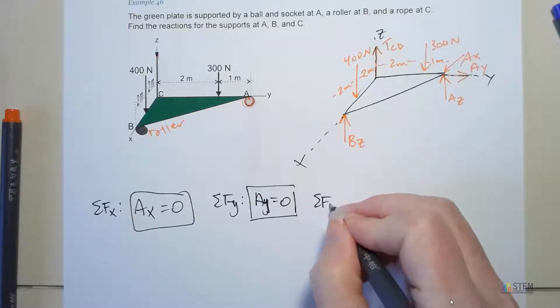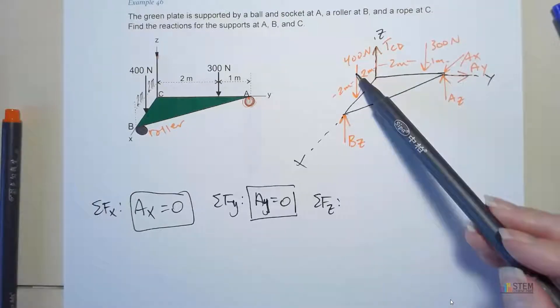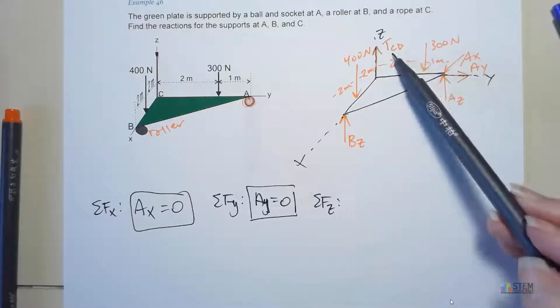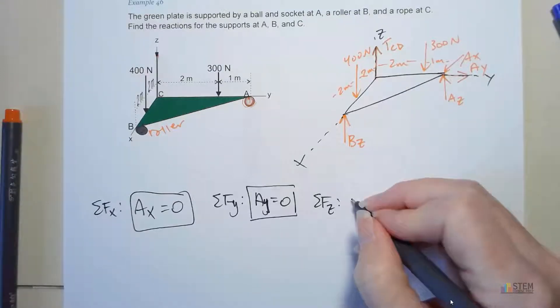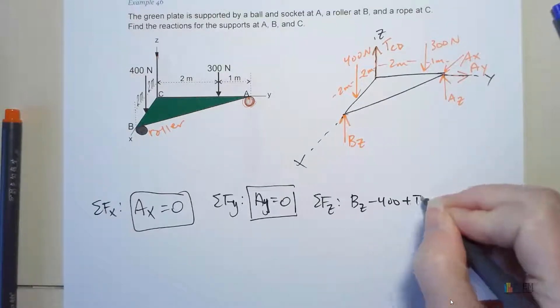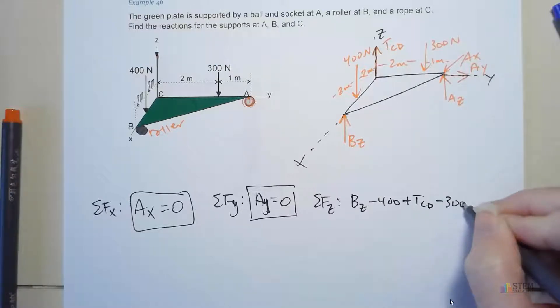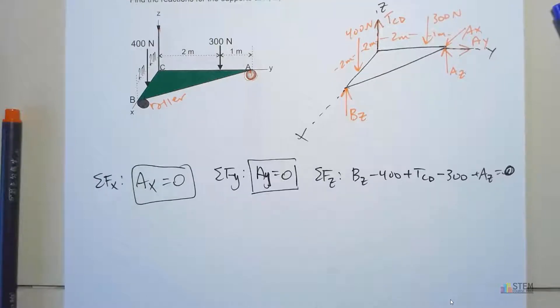And then finally, the Z direction. Everything's in the Z direction. We've got 400, 300, TCD, BZ, and AZ. We've got five forces for this one. So positive BZ minus 400 plus TCD minus 300 plus AZ has to equal zero. We can't solve for anything here. We've got three unknowns, so you're just going to have to hang on to that equation and go back to it in a little bit.